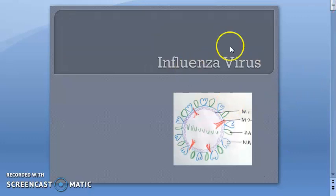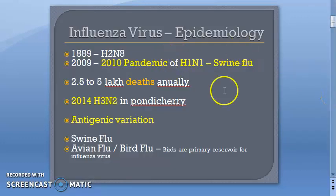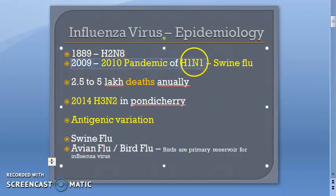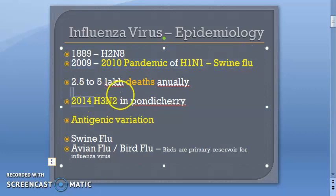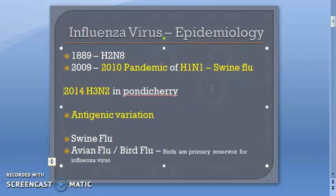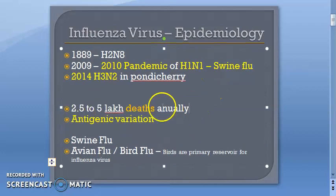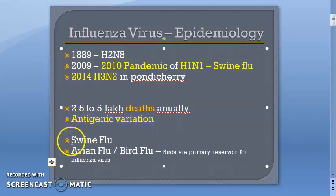We started off with influenza epidemiology. We saw that in 2009-2010 there was a pandemic of H1N1 swine flu, and in 2014 there was H3N2 in Pondicherry. There are a lot of deaths annually — lakhs of deaths — mainly because of antigenic variation. That is why this question is asked very often in the exam.